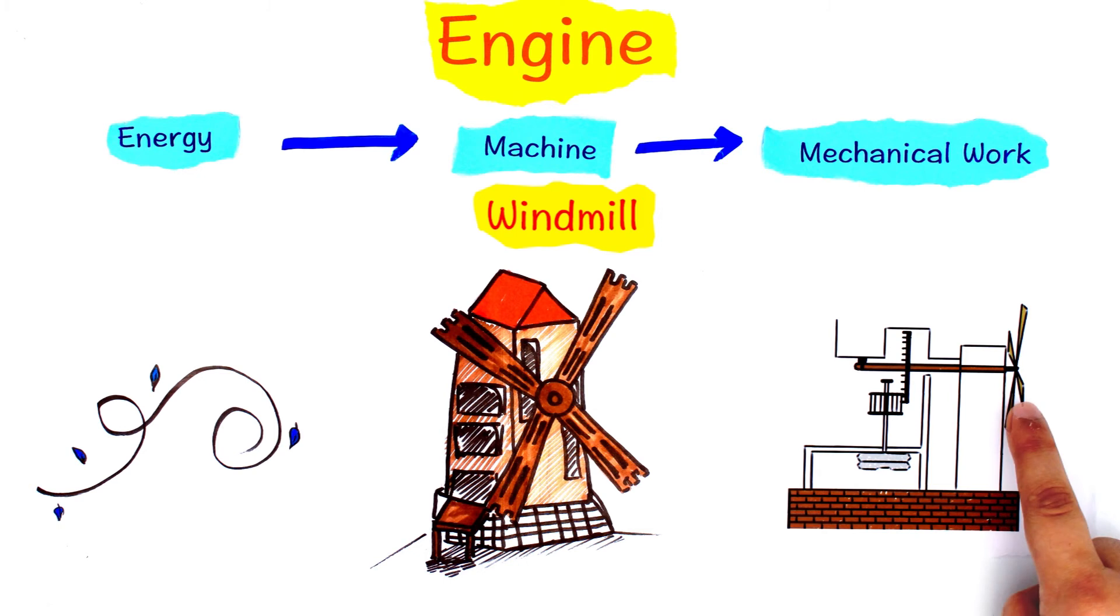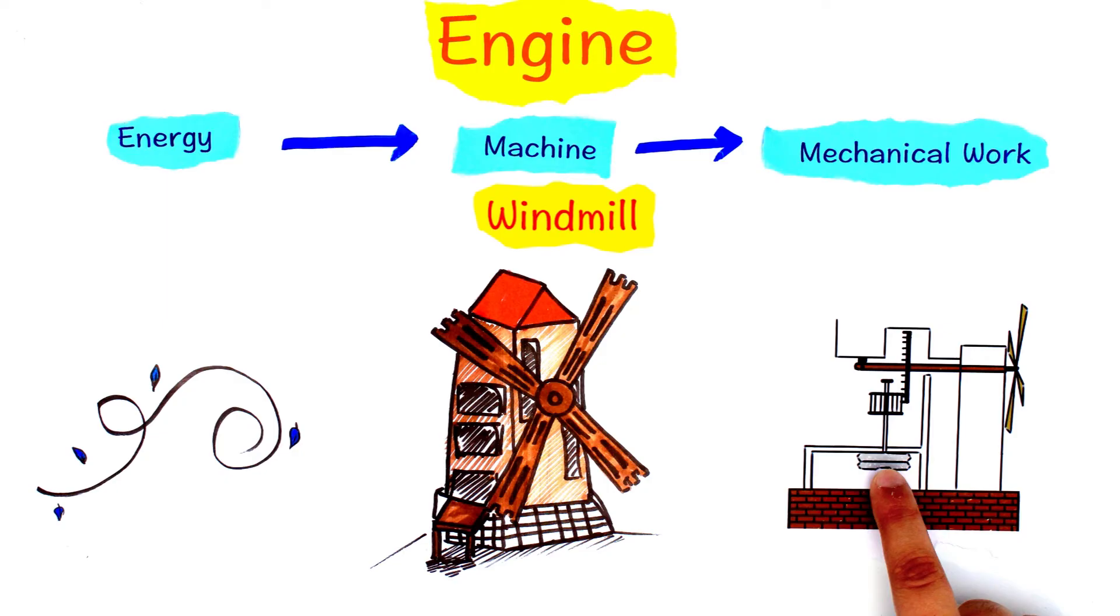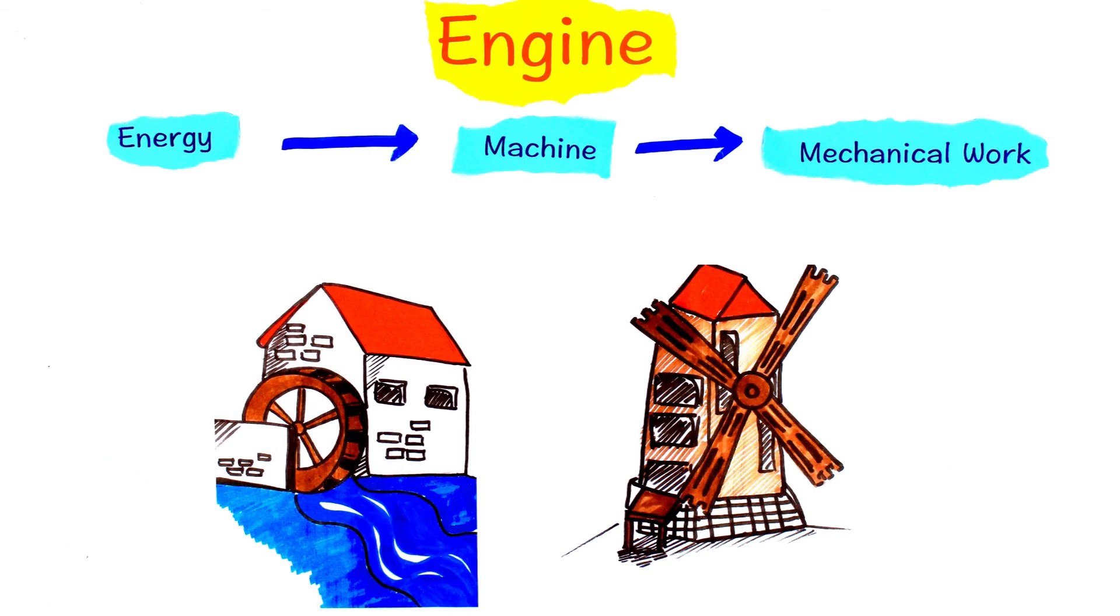This rotation is then converted through a set of axles and gears to be used in milling grains or pumping water or any other type of work. It had the same basic idea of the water wheel but used wind instead of water. Water wheels and windmills served humanity very well, and some of them are still in use even today in some parts of the world.